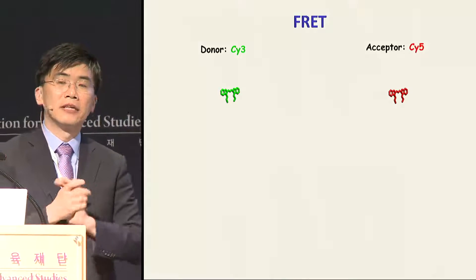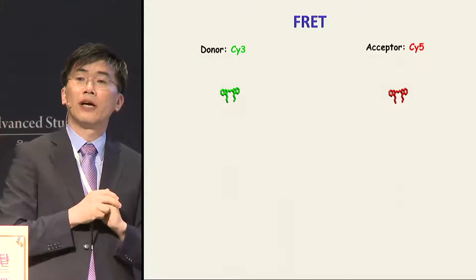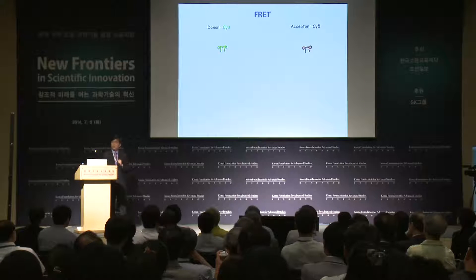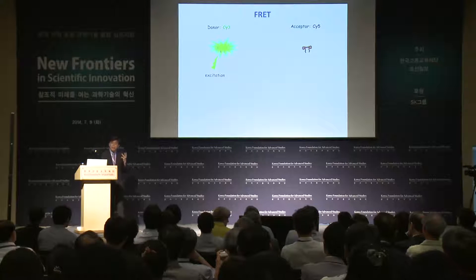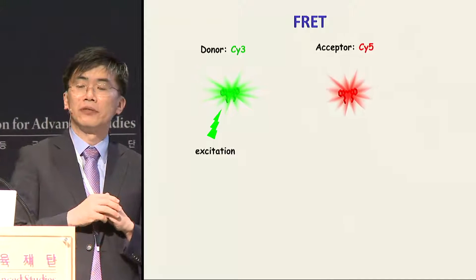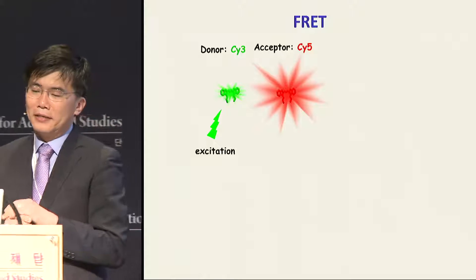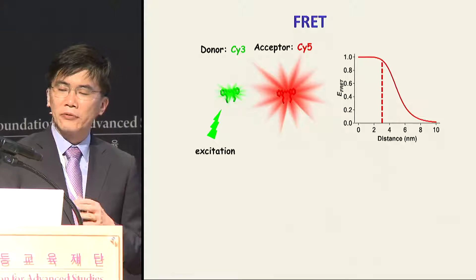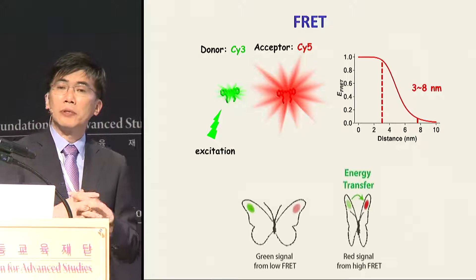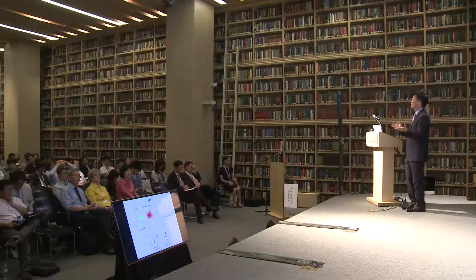We developed another technology called FRET. Here we use two dye molecules of different colors — green and red — so that when you excite the green molecule, you get green photons out, but as the red molecule comes nearby, energy is transferred from green to red, and you get red photons instead. This is a very strong function of distance between the two molecules, around a few nanometers — ideal for many proteins we study — so that you can distinguish between closed and open conformations of a protein depending on which color is brighter.